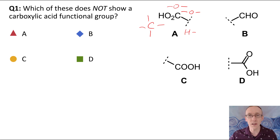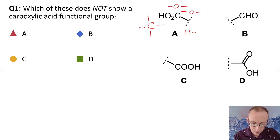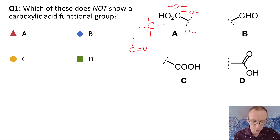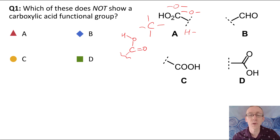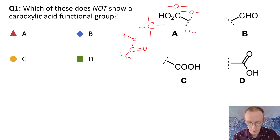The only way to get those things together and satisfy all the requirements is that the carbon must be doubly bonded to an oxygen, and singly bonded to another oxygen with a hydrogen attached — that is the functional group attached to the rest of the molecule. This gives each of the oxygens two bonds, the carbon four bonds, and the hydrogen one bond.